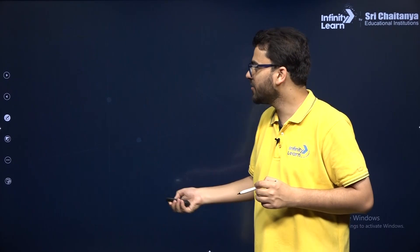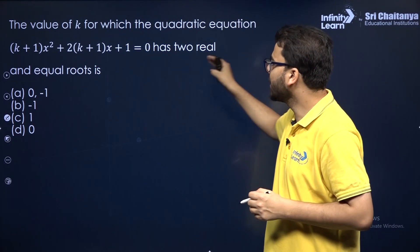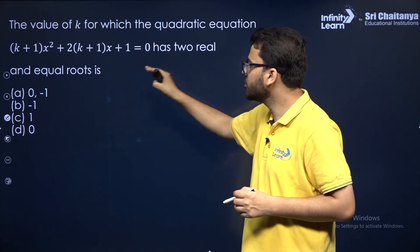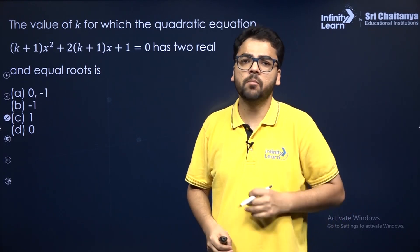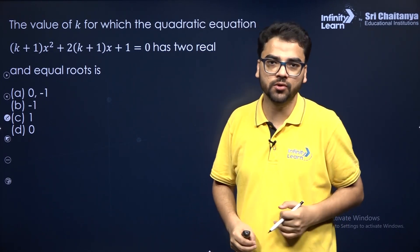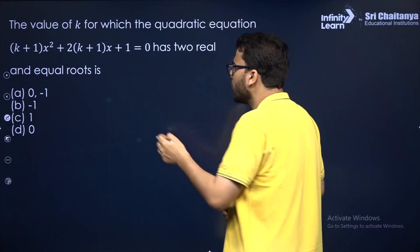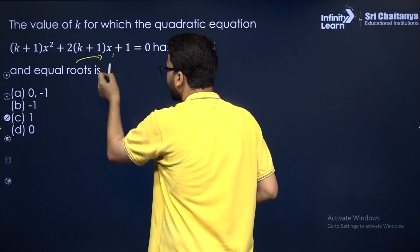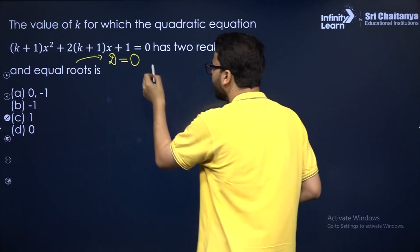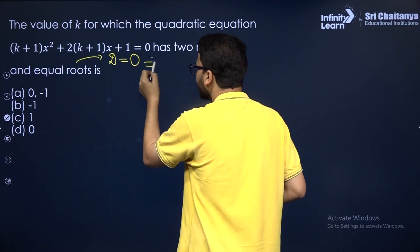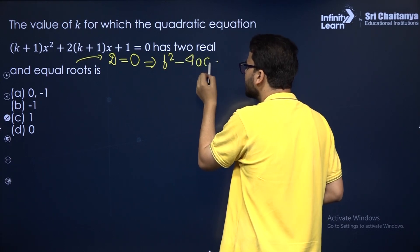So let's take the next question. The value of K for which this quadratic equation has two real and equal roots. This is one of the most important types of questions — equal roots. You will definitely get a question based on this concept. For equal roots, the condition is that the discriminant equals 0.